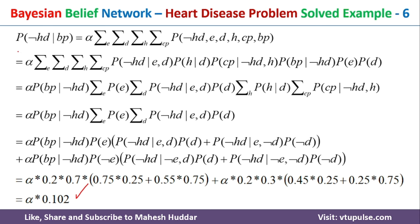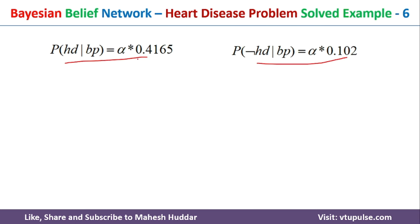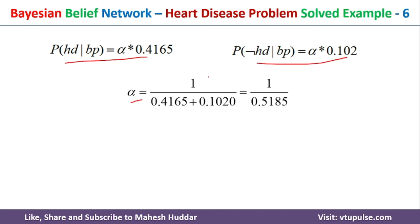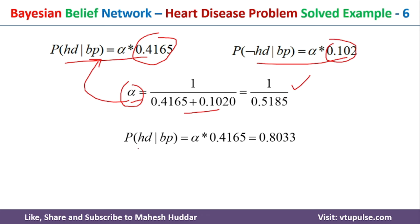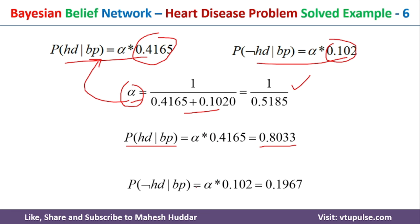Now that we have both probabilities, we calculate alpha. Alpha equals 1 divided by the sum of both terms, which is 1 divided by (0.4165 + 0.102), giving 1 divided by 0.5185. Substituting alpha back, the probability of having heart disease given blood pressure is 0.8083, and the probability of not having heart disease given blood pressure is 0.1967.